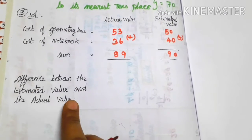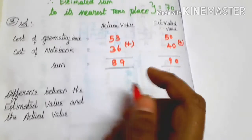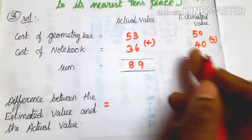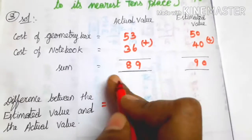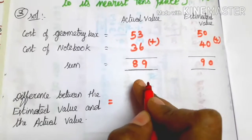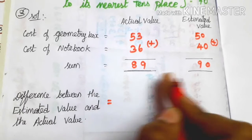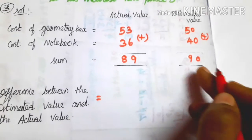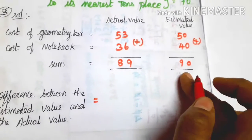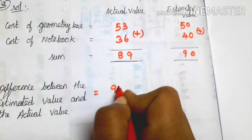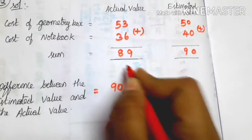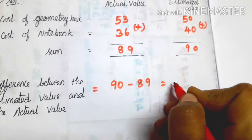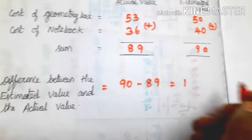Find the difference between the estimated value and the actual value. You need to find the difference: 90 minus 89 equals 1. So the difference between the estimated sum and the actual sum is 1.